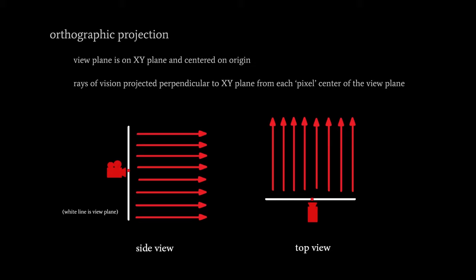For each ray, the question is: what polygon surface does it collide with, if any? And at that point of collision, what is the color of that surface? That is what we want for the color of the corresponding pixel. So from each pixel you're shooting a ray of vision — it hits something, and the question is what is the color there. In this orthographic projection, all rays of vision shoot out perpendicular from the XY plane, so they all run in parallel.